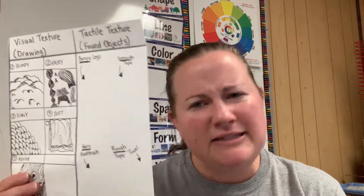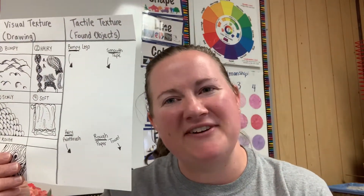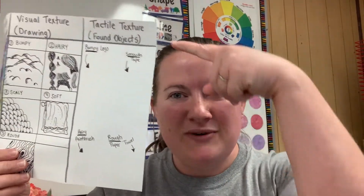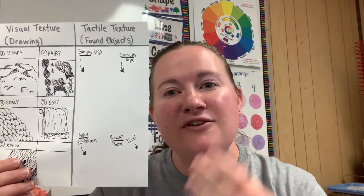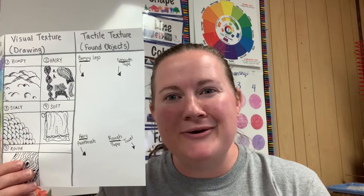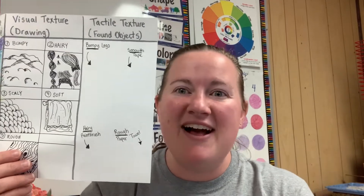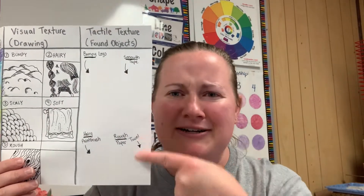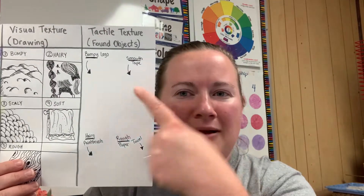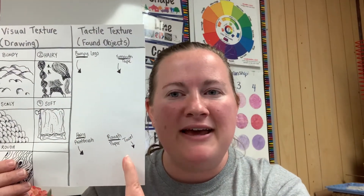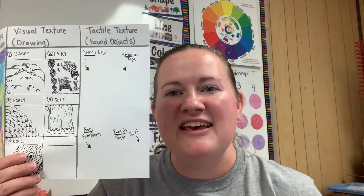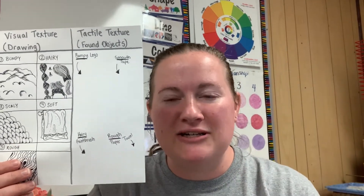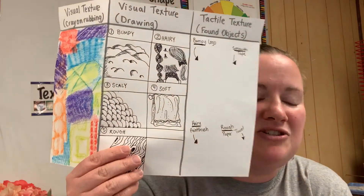Last but not least, this part is empty, which I know looks a little funny. Tactile. The word tactile texture means we can actually touch it — we can feel it with our fingers. And these are found objects, so they're objects that I found around the classroom, around my house. They're not ones that I would glue down here. In fact, I laid them on my paper, labeled them as rough, hard, bumpy, smooth, and then took a picture of my final project for this graphic organizer about texture.